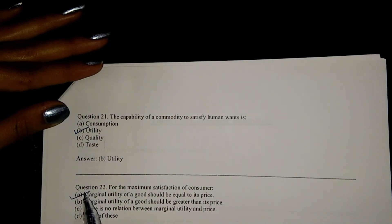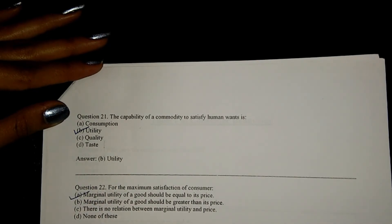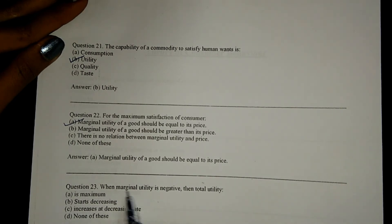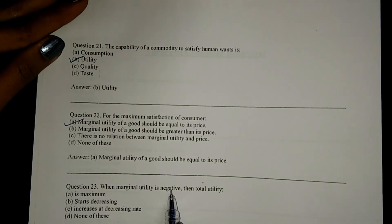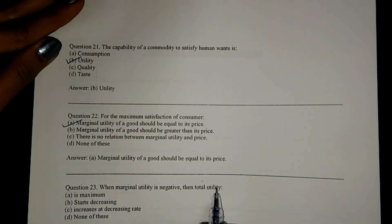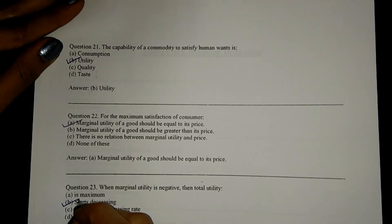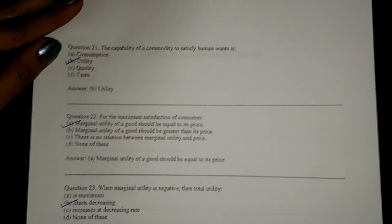Next, for the maximum satisfaction of consumer, marginal utility of a good should be equal to its price, that is option A. When marginal utility is negative, the total utility B, starts decreasing.